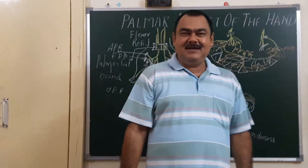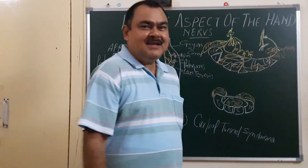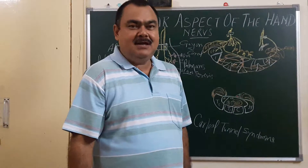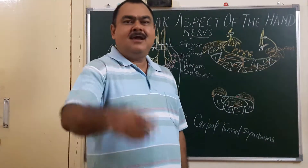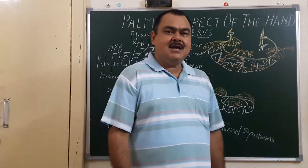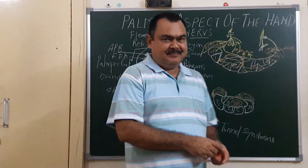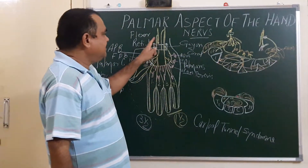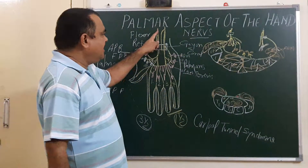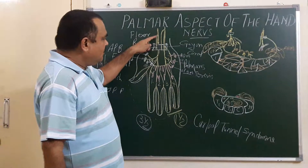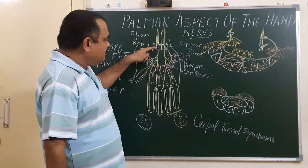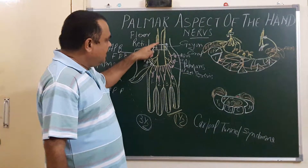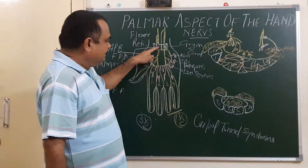We will discuss the applied aspect of the median and ulnar nerve. First, we will discuss the applied aspect of the median nerve. Here in this diagram you can see the median nerve. Here is the palmar cutaneous branch, which passes superficial to the flexor retinaculum. This median nerve passes deep to the flexor retinaculum.